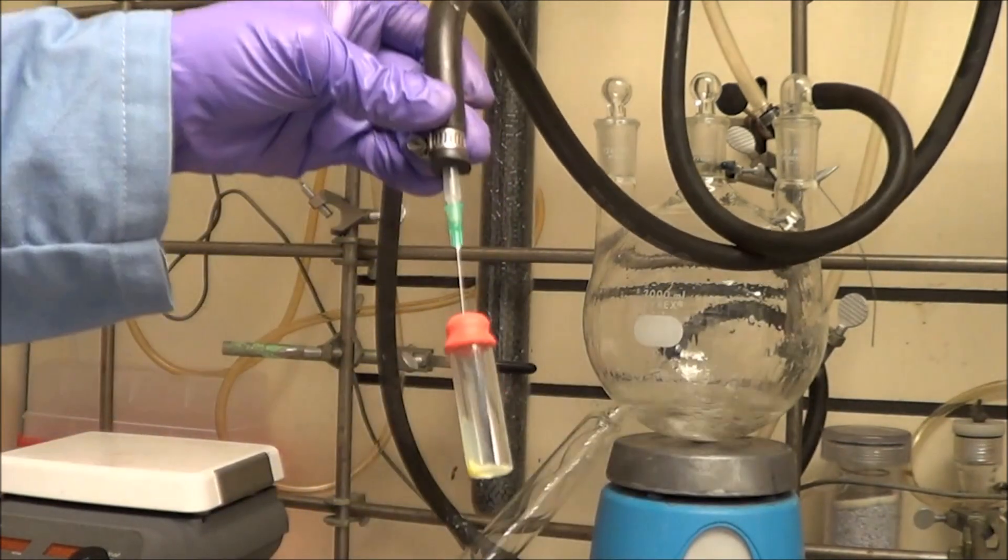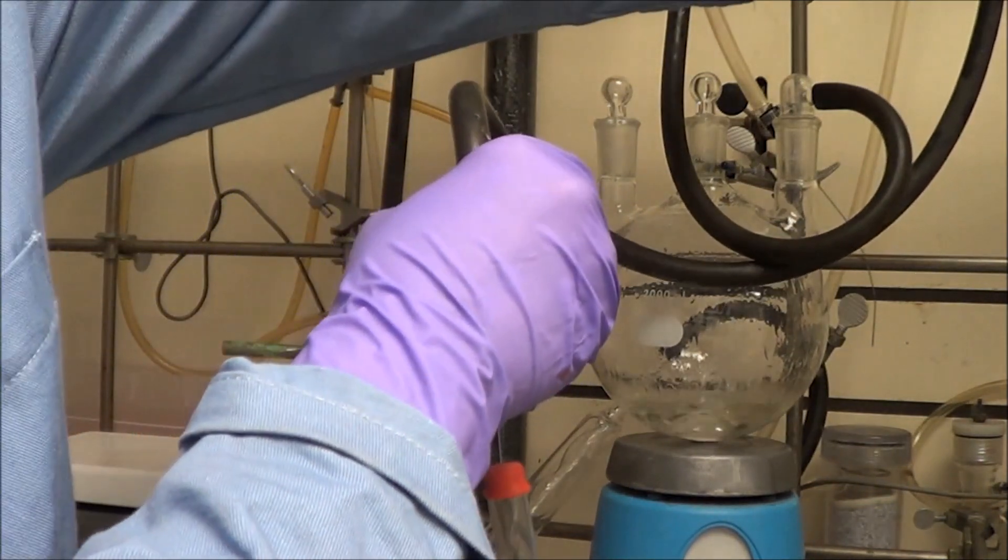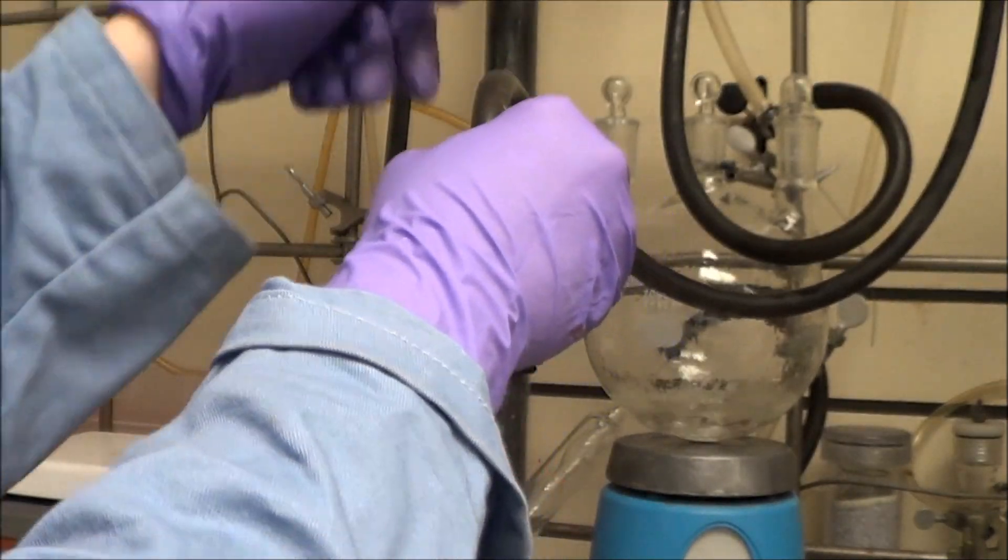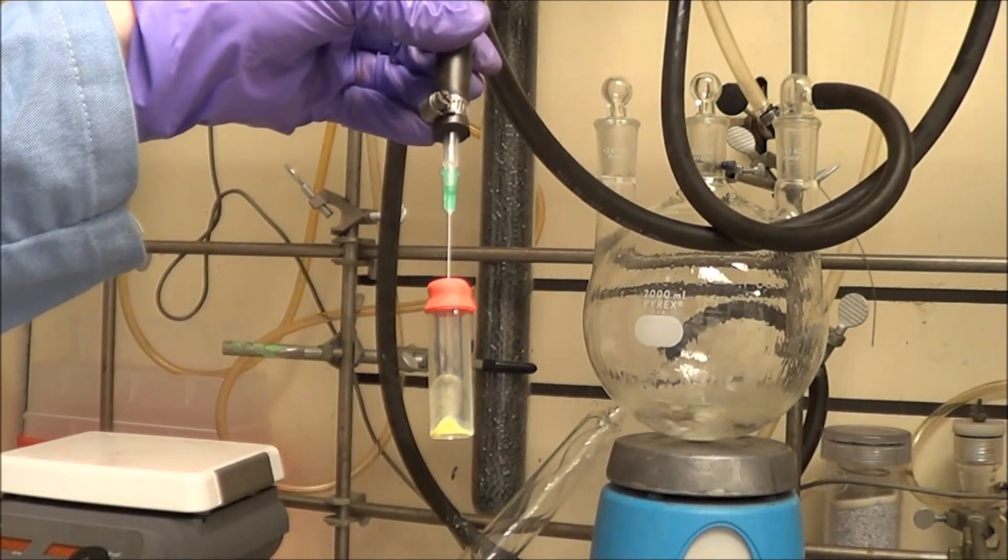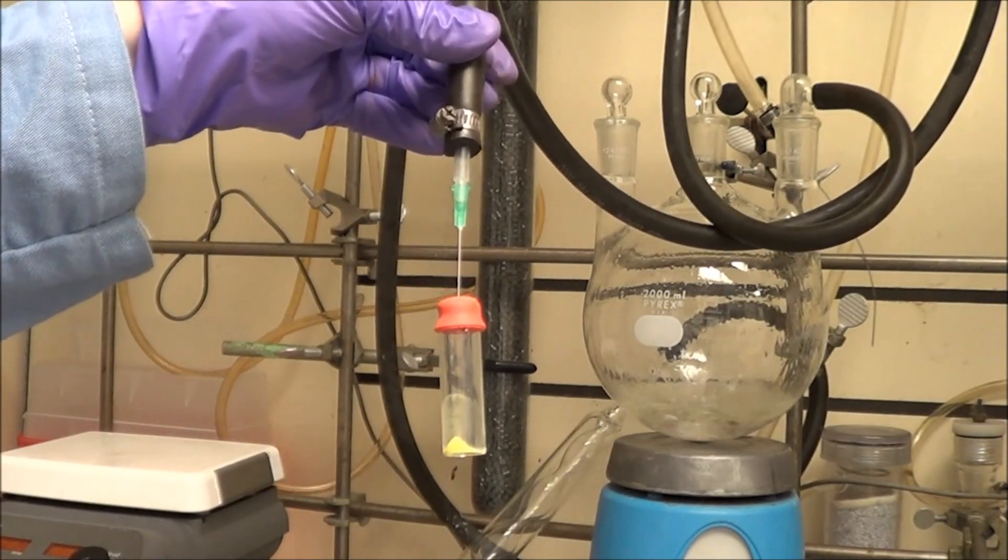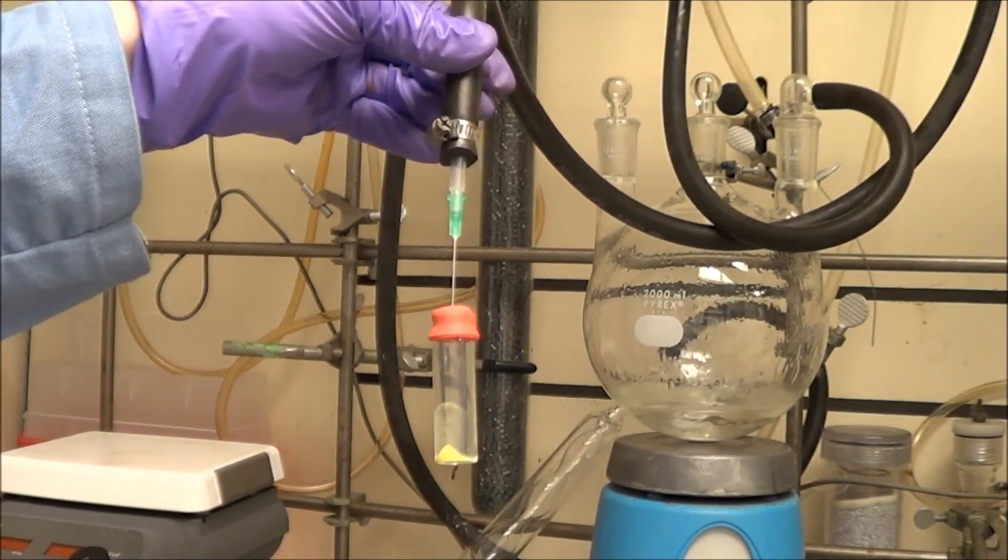Here we are attaching it to the Schlenk line, and one way that I know that it's dry with this initial drying is that I have a pressure gauge attached to my Schlenk line. Once the pressure has gone down to the equilibrium, I know it's done. I try not to overly dry the sample because that seems to cause less dots to go into water later on.